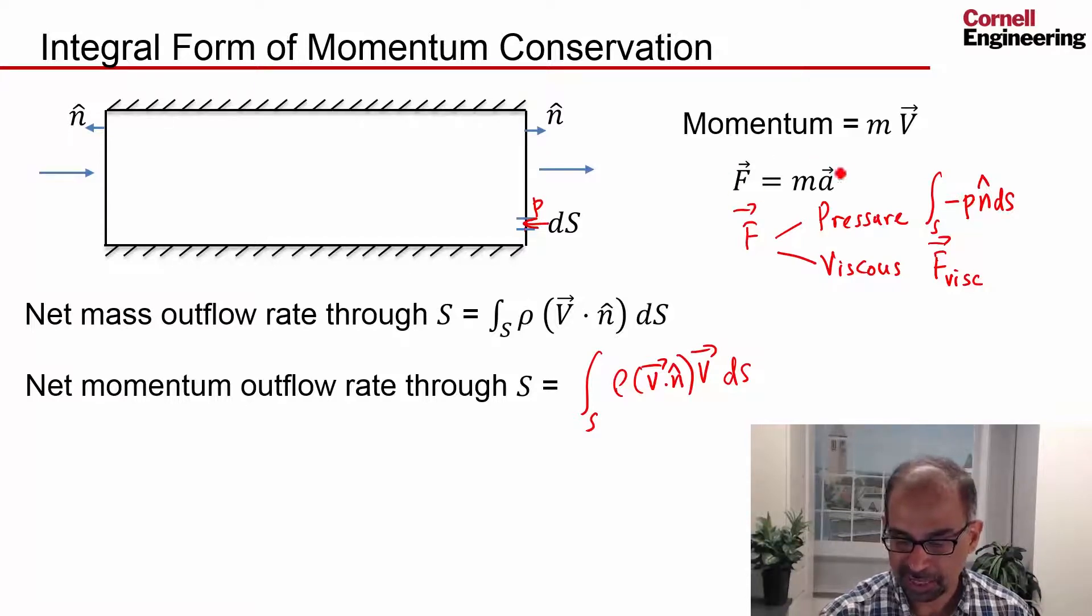Then we can write the aggregate view of F = ma as the net momentum outflow rate.